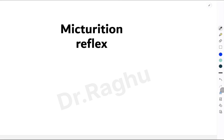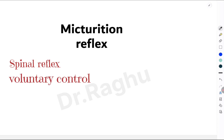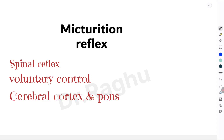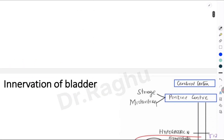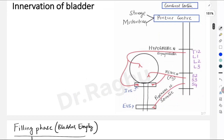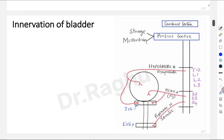Hello there. In this video let's understand the micturition reflex. The micturition reflex is a spinal reflex, but remember that in young children as well as in adults it is under voluntary control, and this voluntary control is coming from the higher centers like the cerebral cortex and the pons. In order to understand the micturition reflex we have to first understand the innervation of the bladder.